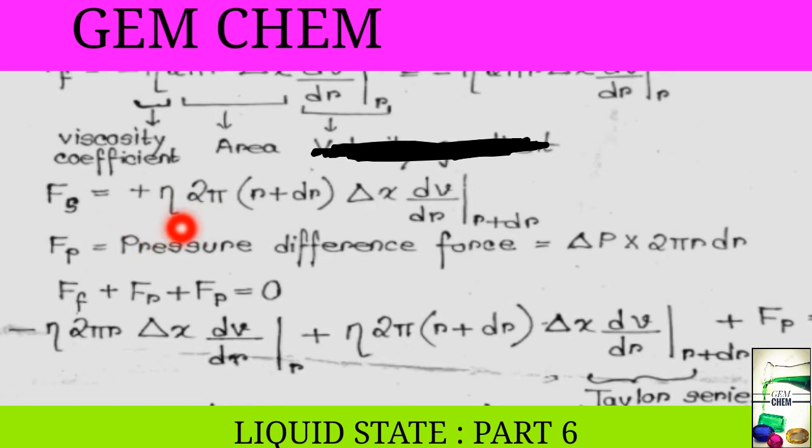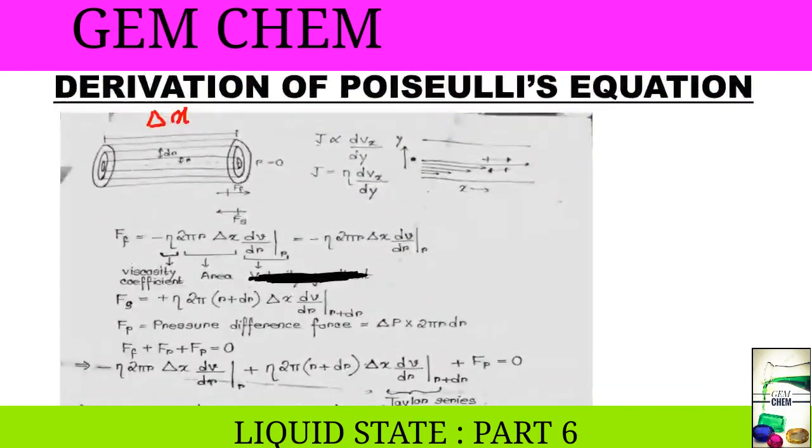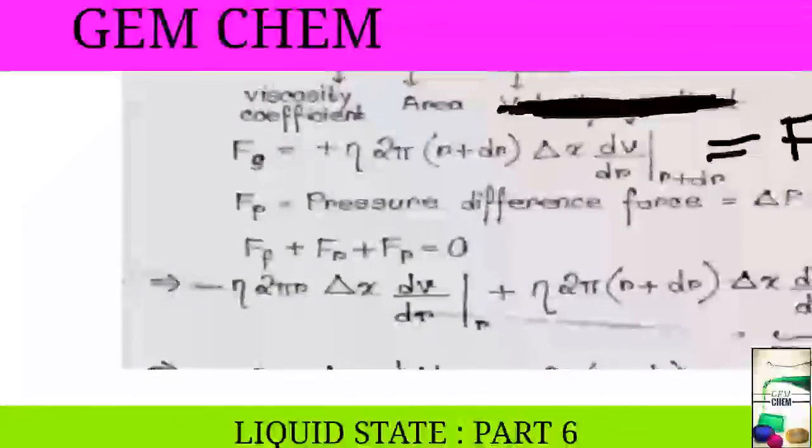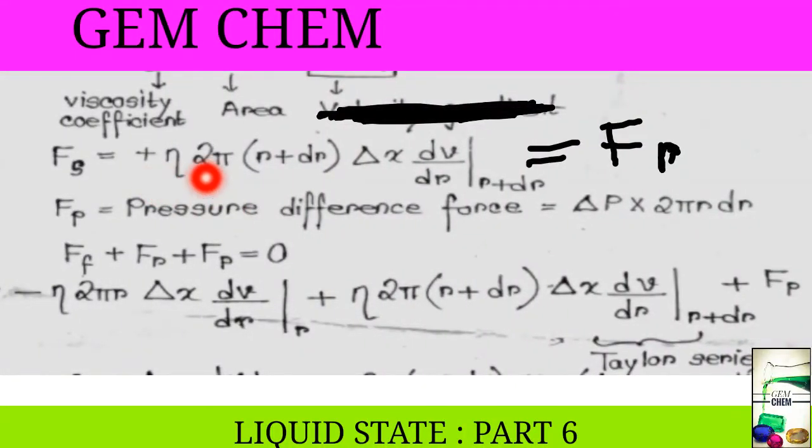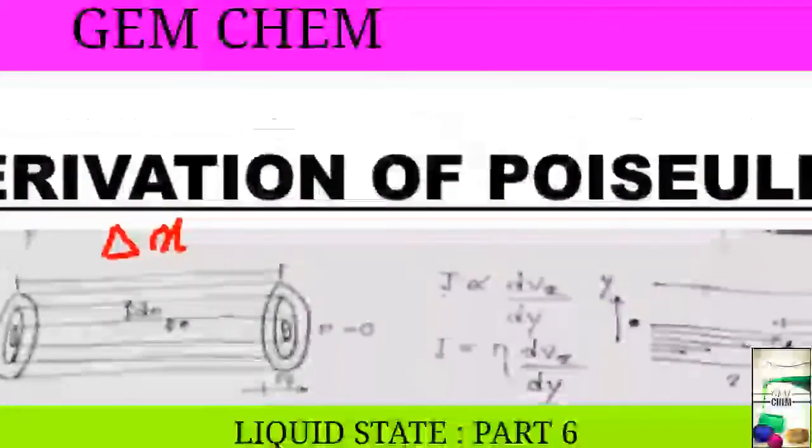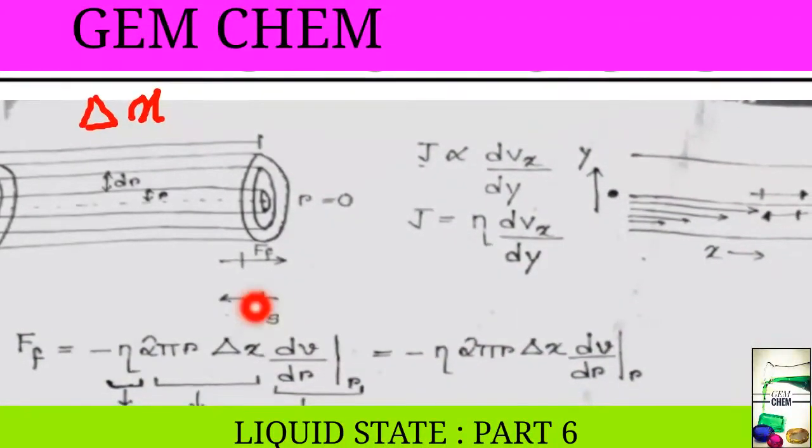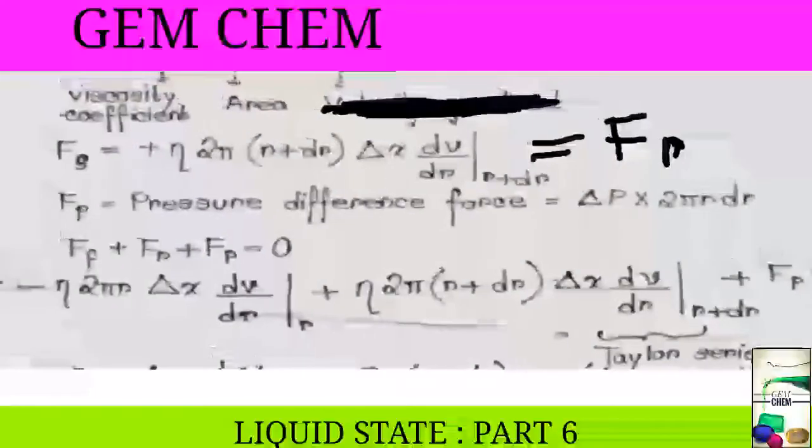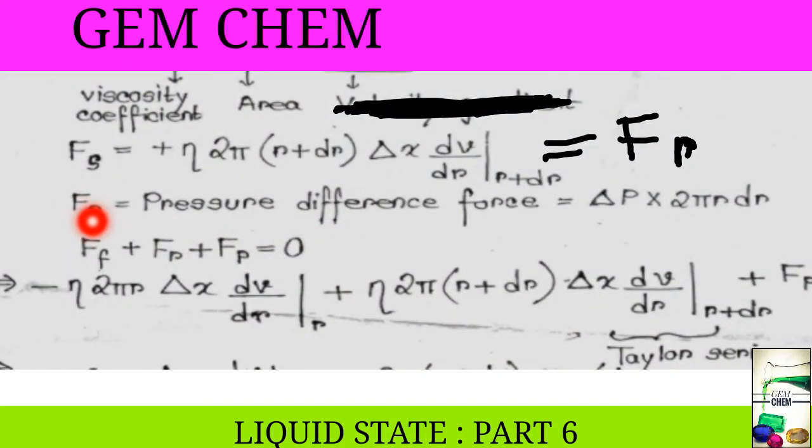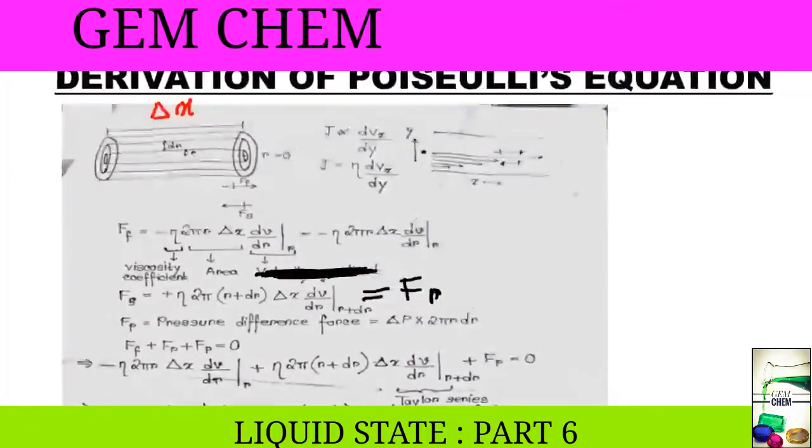Now, we see for the slow moving one. We can take it also as Fr. That is, while deriving this one, we will consider this to be equal to Fr. Now, for slow moving one, it is plus eta 2 pi r plus dr delta x dV by dr. Why plus? Because this occurs in opposite direction to the fast moving one. The last force which occurs is Fp, that is pressure difference force equal to delta p into 2 pi r dr. Fast moving cylinder has a radius of r and the slow moving cylinder has a radius of r plus dr.